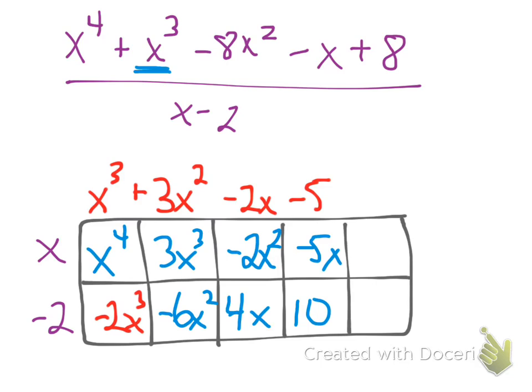Now that all happened the same as the last problem. The only difference now is I'm ending with a positive 10, but I want a positive 8. So I just continue the process one more step. And 10 plus what is going to make positive 8? So this box here has to be a negative 2. That is my remainder.